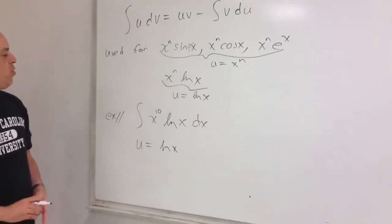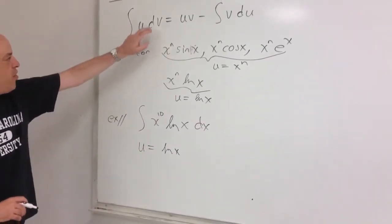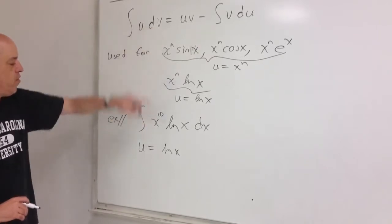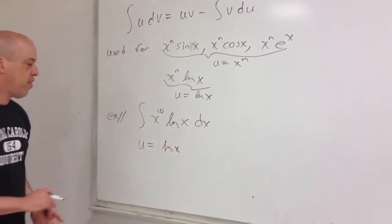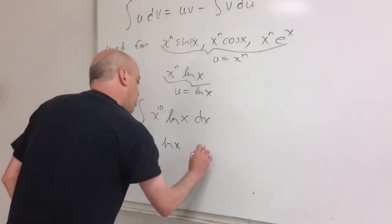Now, whatever we call u, everything left over needs to be dv. So what's left over here? x to the 10 times dx. That has to be the dv if we're going to let u equal log x.